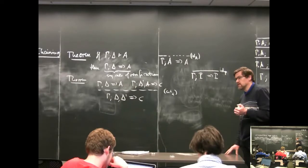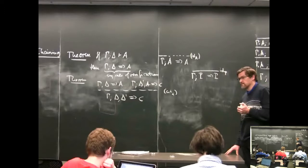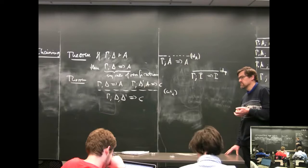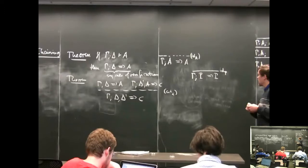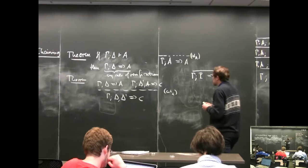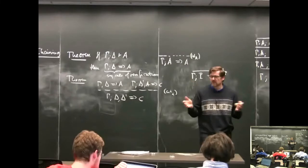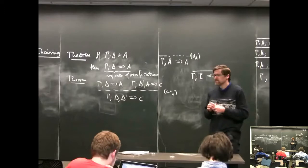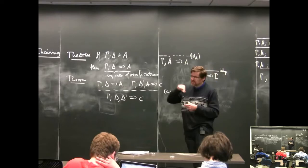Student question: in natural deduction, the cut is already built into the rules, so you don't really need to verify it separately? We still need to verify something: if you take natural deduction as a definition of your logical connectives, you still need to define a notion of verification, and show that everything that has a natural deduction also has a verification. There is an analog of the cut rule in natural deduction. I will talk about natural deduction soon.